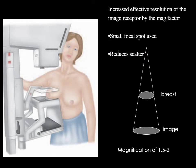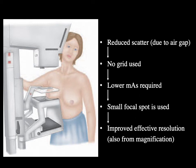Mammography can also be performed in magnification mode using geometric magnification. A stand is placed above the image detector and the breast is placed on top of this stand. A smaller focal spot is used, and the air gap between the magnification stand and the image detector not only magnifies the image by a factor between 1.5 and 2, but also reduces the amount of scatter reaching the detector. Because the air gap reduces scatter, no grid is used, which lowers the mAs required and allows a small focal spot, helping to improve effective resolution.